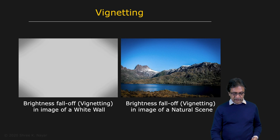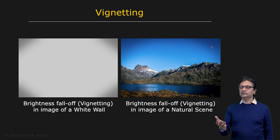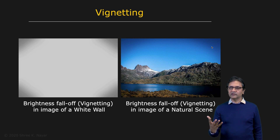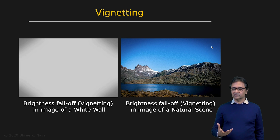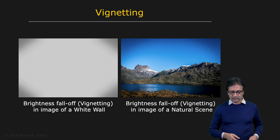Here is an image of a perfectly flat white surface, but you can see that the corners are darker. This is another image where there's some darkening of the corners as well. Now, if you know what the vignetting of a lens is, one nice thing is that you can measure these effects and correct the images that you capture for them.